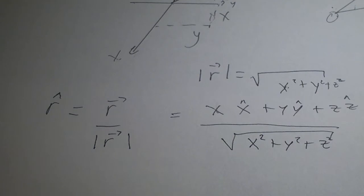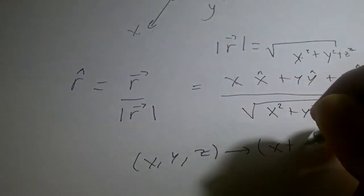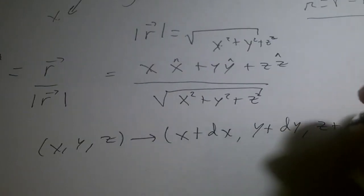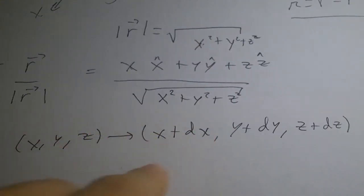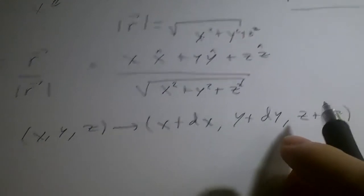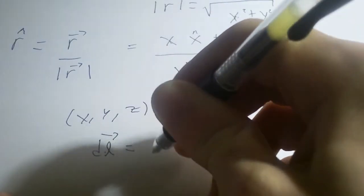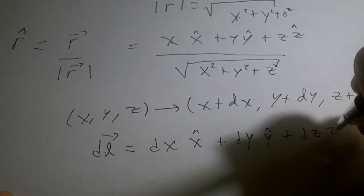So the unit vector r-hat is pointing radially outward. The infinitesimal vector from x, y, z to x plus dx, y plus dy, z plus dz is usually denoted as dl, which is dx x-hat plus dy y-hat plus dz z-hat. This is the infinitesimal distance from point A to point B.